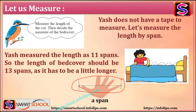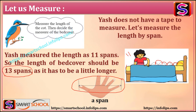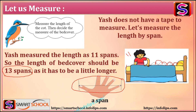He measured the length as 11 spans. He counted 1, 2, 3, 4, 5, 6... all the way till the end — 11 spans. The bed sheet should be longer than the cot, so he decided to take a bed sheet of 13 spans. Like this, we can measure with our body parts and understand how much length is required.